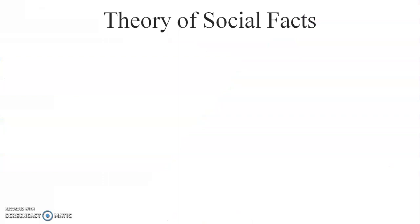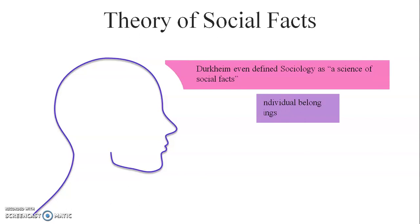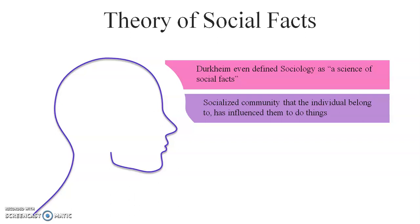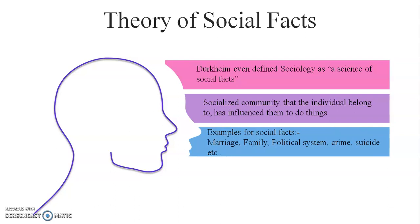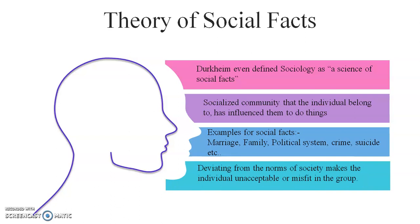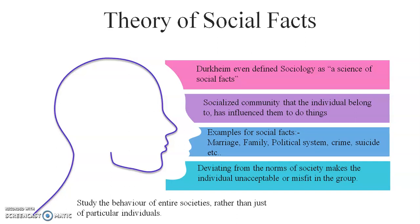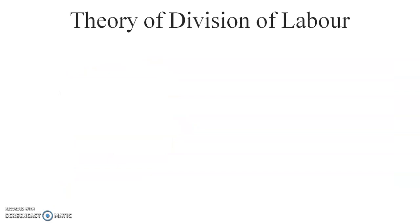Durkheim even defined sociology as the science of social facts. The socialized community that the individual belongs to influences them to do things. Marriage, family, political systems, crime, and suicide are all examples of social facts. Deviating from the norms of society makes the individual unacceptable or a misfit in the group. Social facts study the behavior of entire societies rather than just particular individuals.